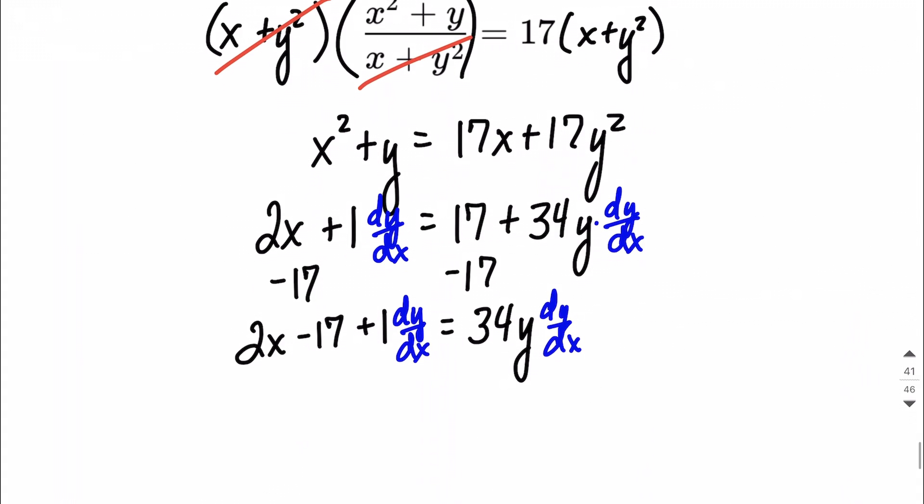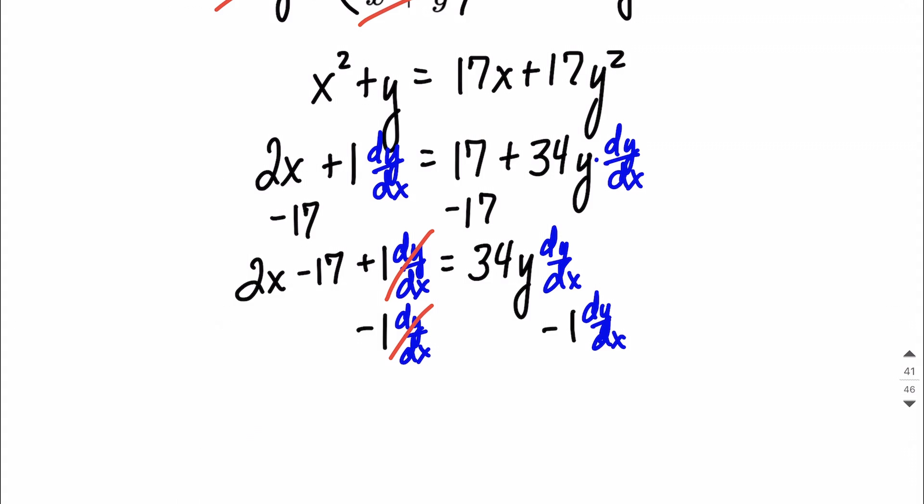All right. My next move is I'm going to get all the dy dx terms over on the right-hand side. So I'm going to subtract this 1 dy dx. Move it over. Minus 1 dy dx. Okay. So these go away from the left-hand side. So we have 2x minus 17, bringing that down, is 34y dy dx minus 1 dy dx.